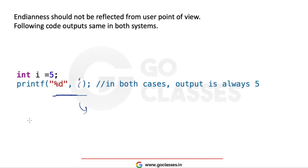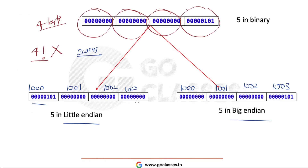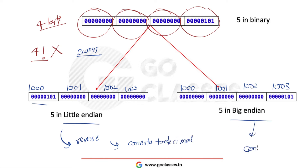Let's see what is happening inside. The number 5 in little-endian is stored in reverse, and in big-endian it is stored directly. Whenever you are fetching data in little-endian, it will first reverse the bytes and then convert to decimal. In big-endian, it directly converts to decimal because the data is already stored in the same fashion as the binary pattern. So in little-endian, we first reverse when storing, and must reverse again when fetching.